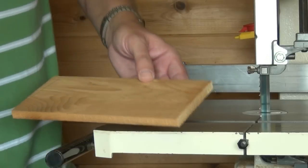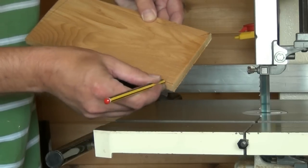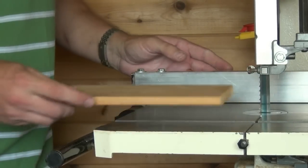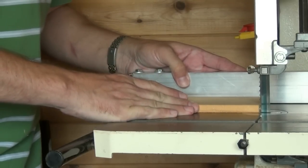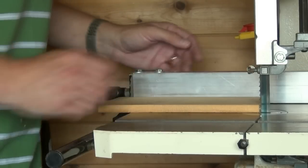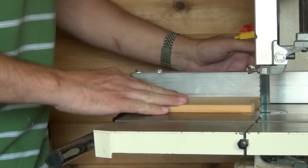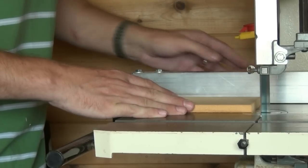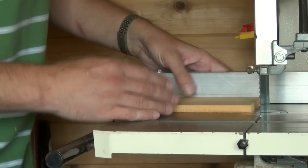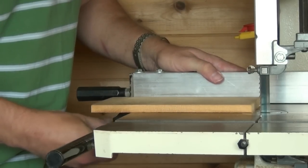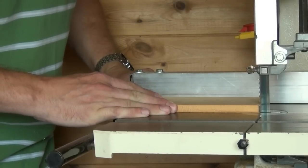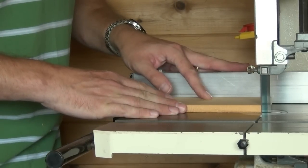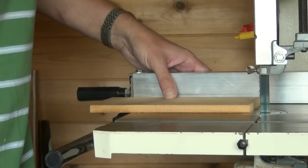To cut to width, for example to here, we've already set our fence for the drift angle of the blade. So we simply move up close to our line, lock the fence, and take a little cut. Now we can adjust our fence very slightly just to bring it exactly to where we want it. And that's perfect.